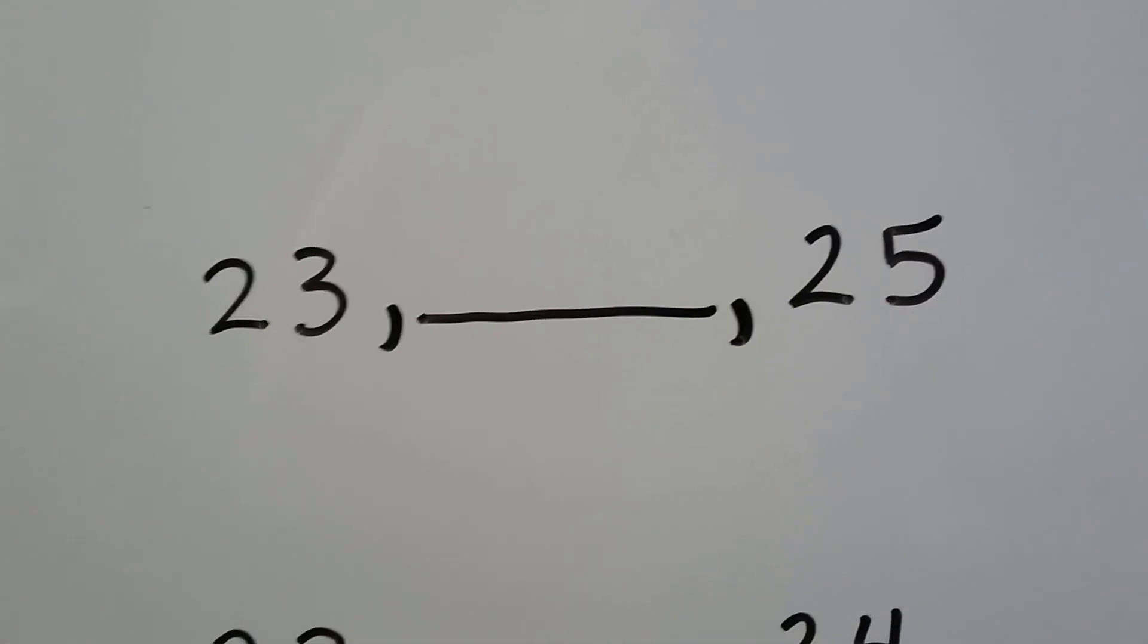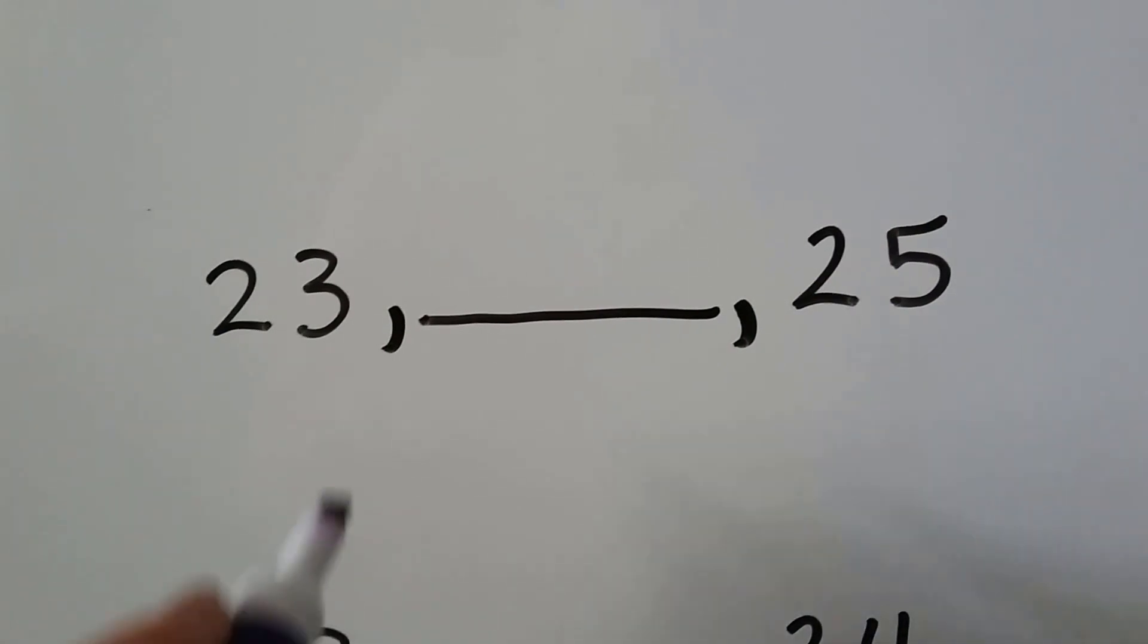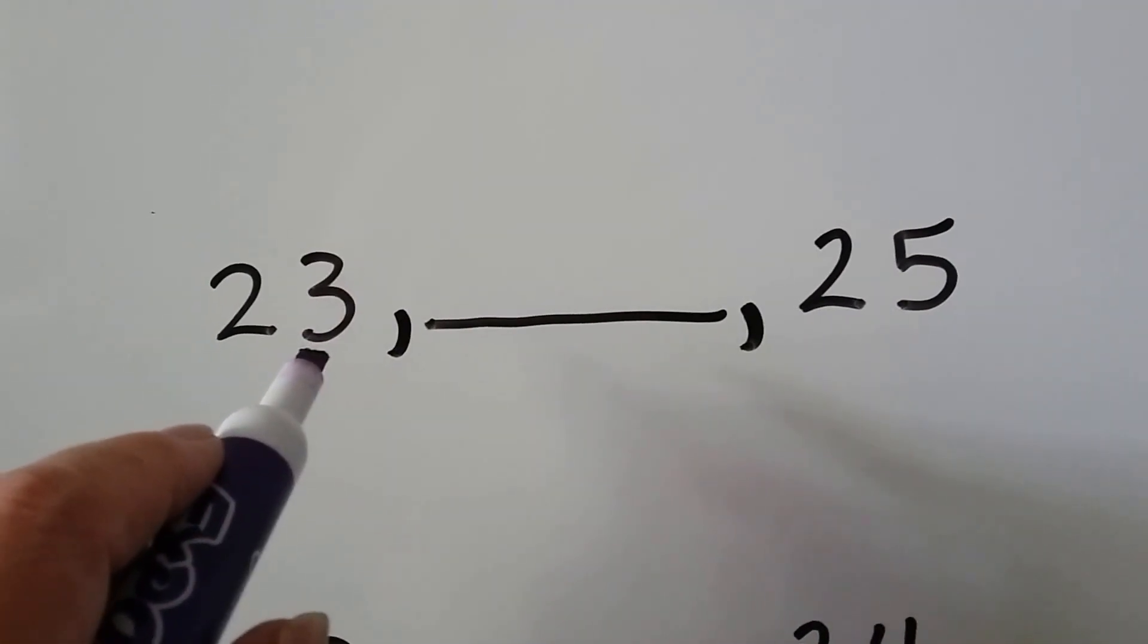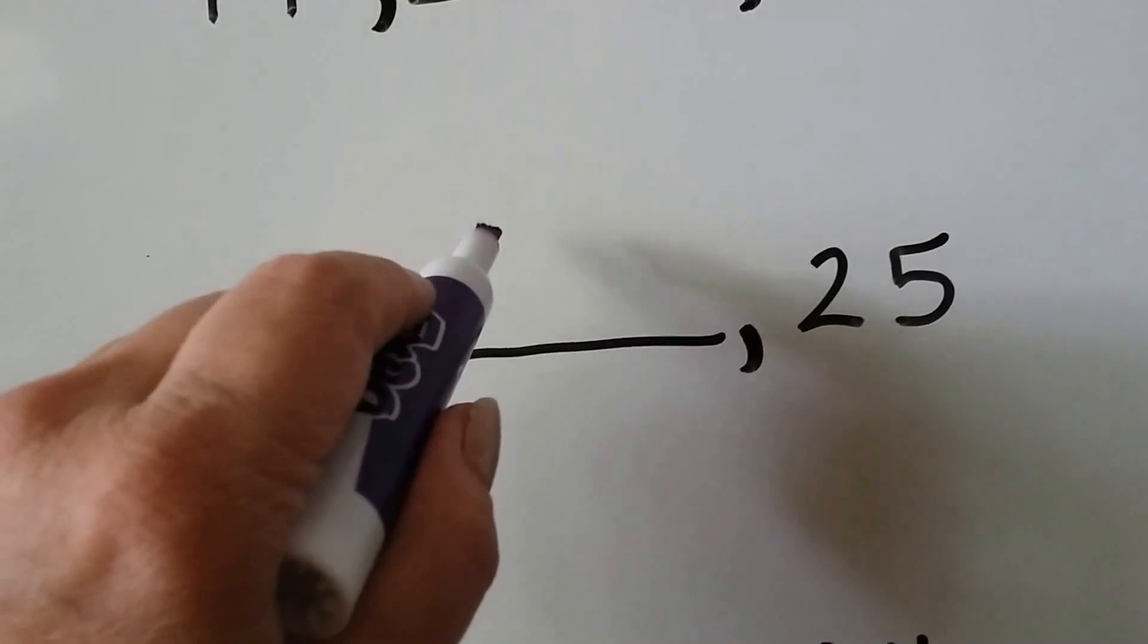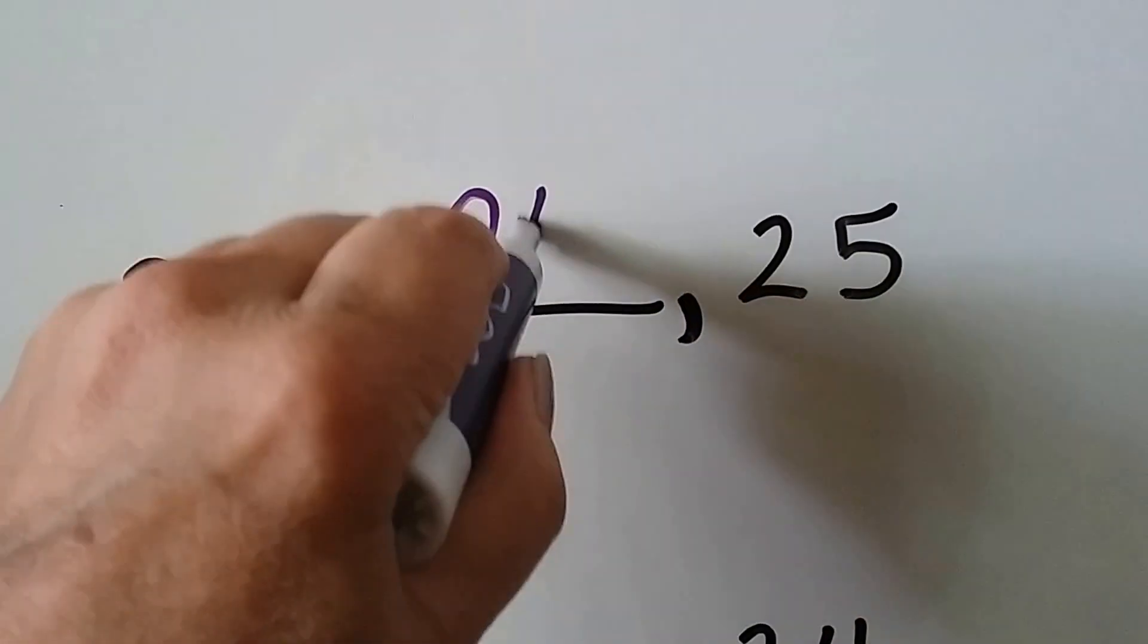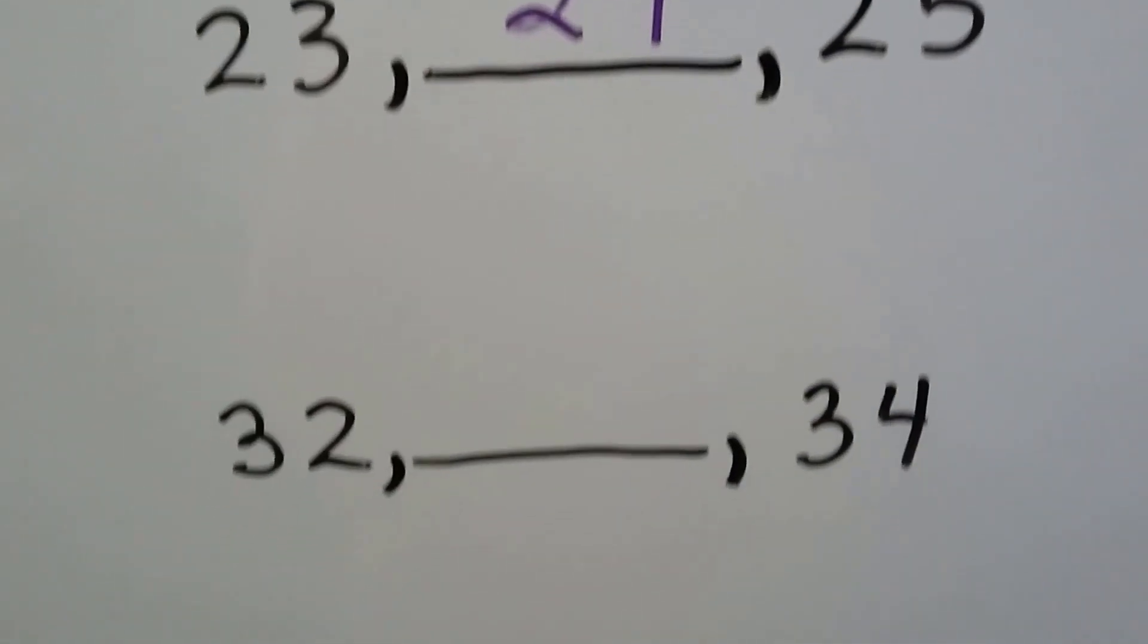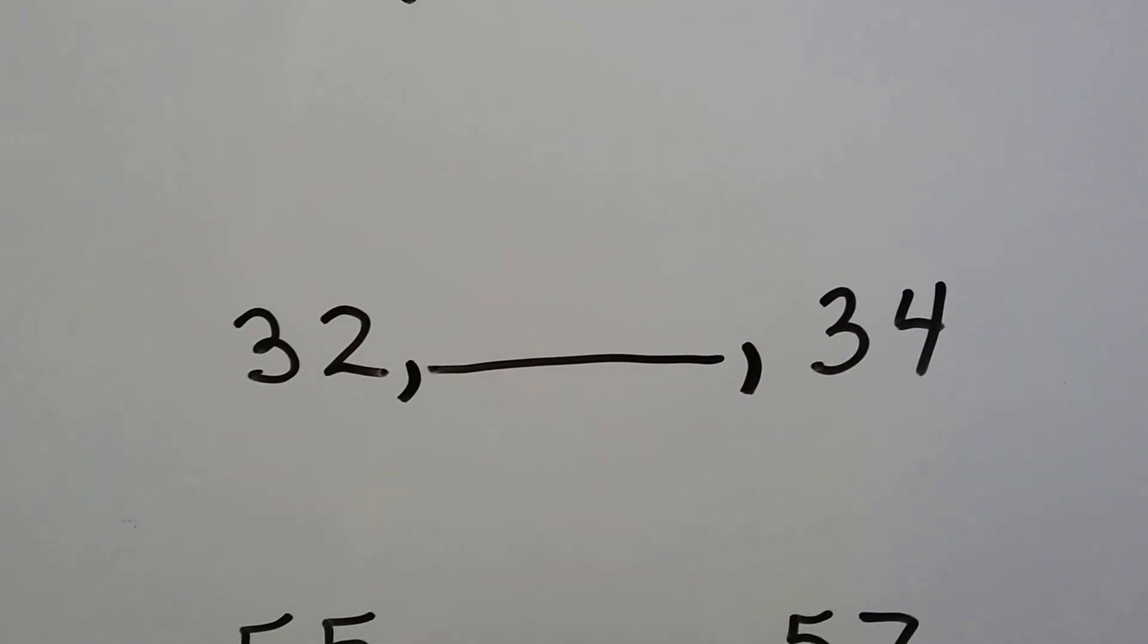What number comes between 25? What's the missing number? 23, 24, 25. What number comes between 32 and 34?